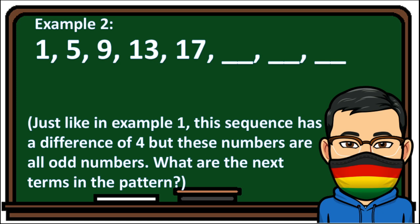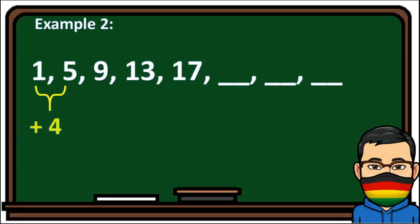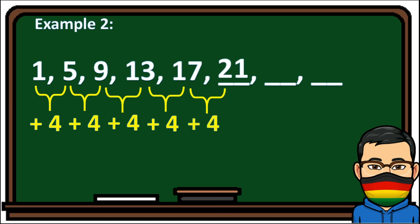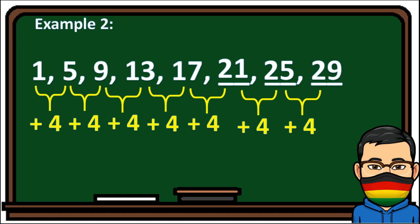The pattern is always plus 4. So 17 plus 4 gives the next missing number, which is 21. Then add 4 again: 21 plus 4 is 25. Then add 4 to 25: 25 plus 4 is 29. So your answer is 21, 25, and 29.